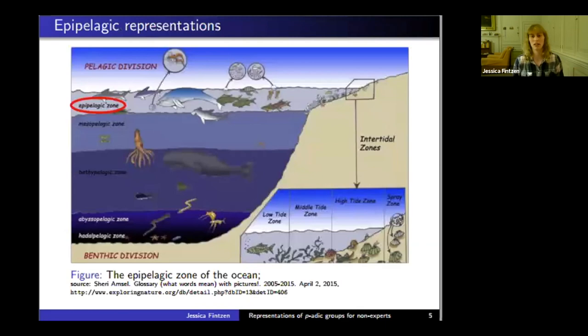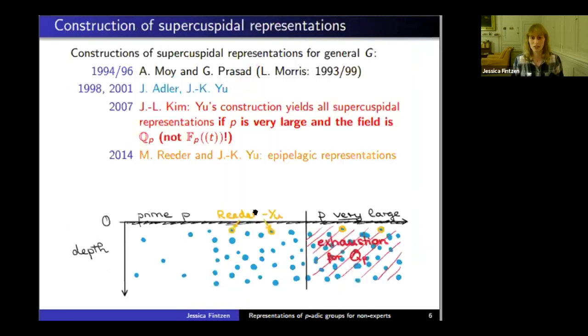They called them epipelagic because Reeder explained that he thinks of a representation as a fish that swims in an ocean. The epipelagic zone is the upper zone of the ocean that can be reached by sunlight, and these representations are close to the surface.